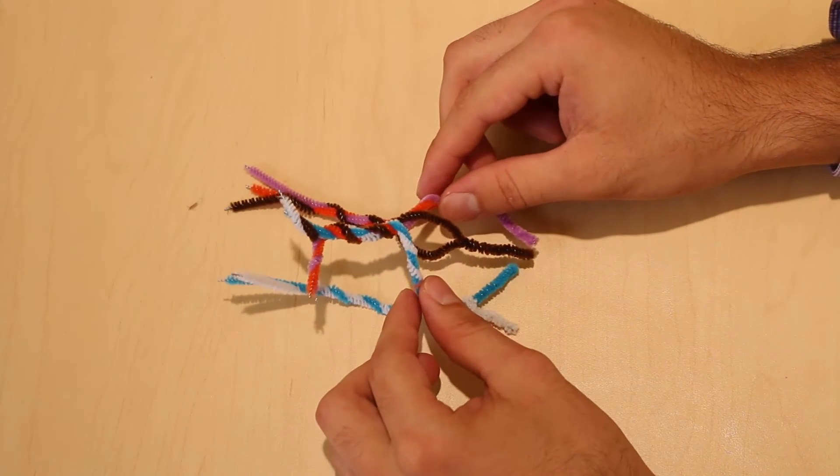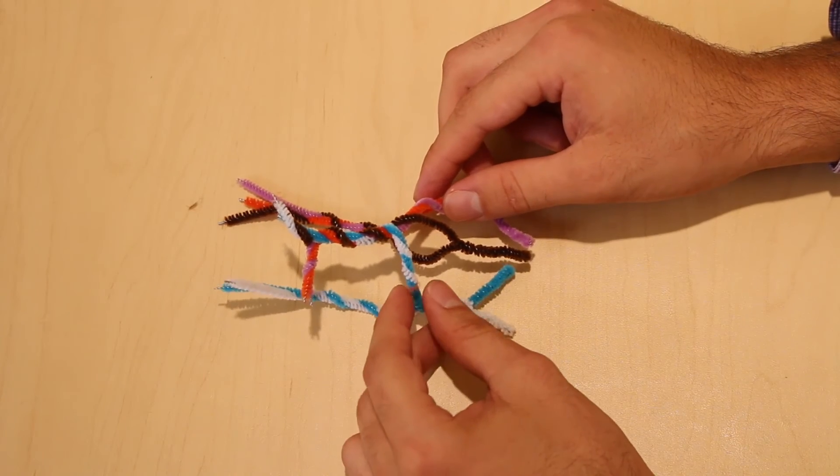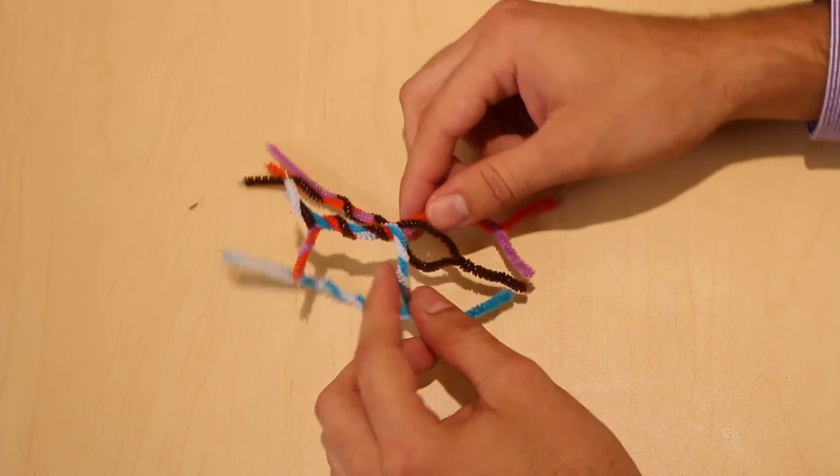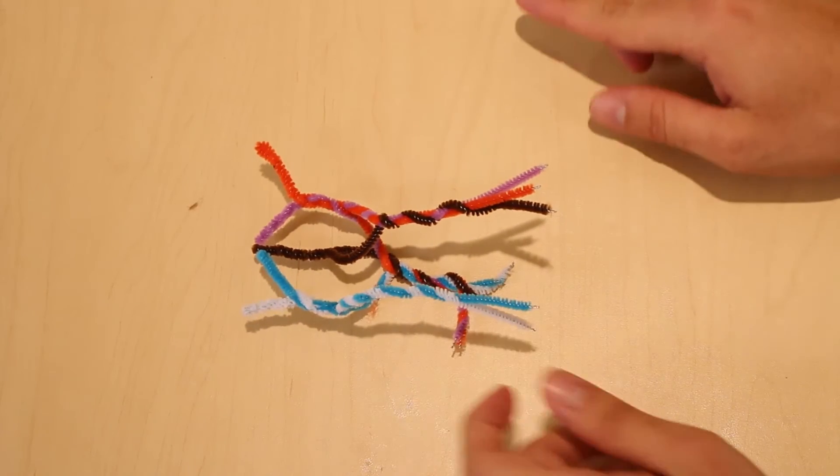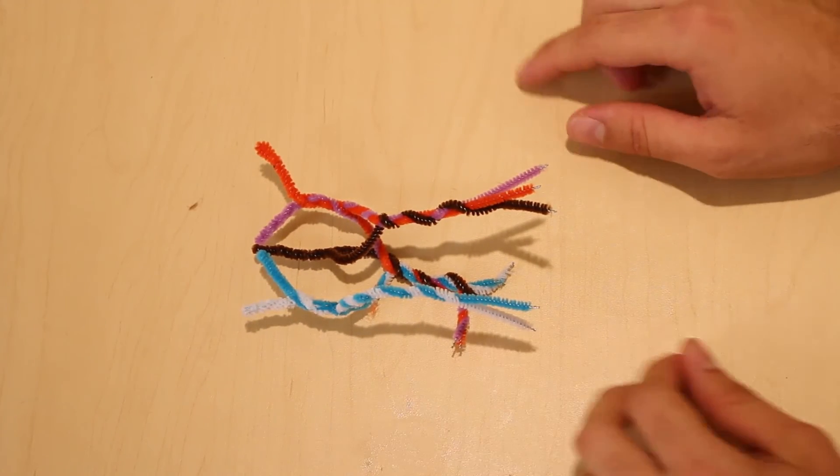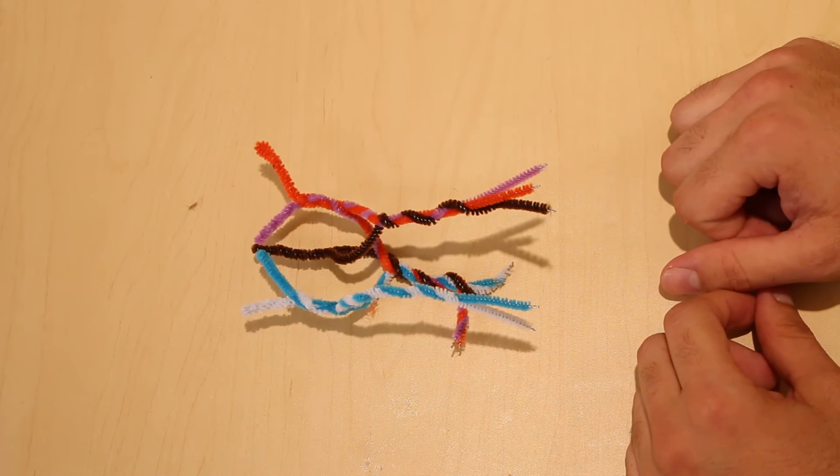To examine the lateral and medial cords, we are going to flip the model 180 degrees. Here, we have maintained our same superior-inferior relationships.